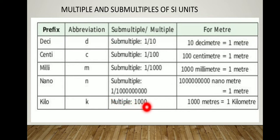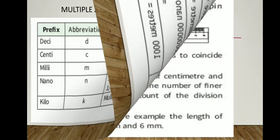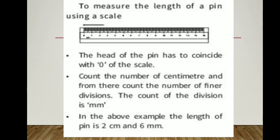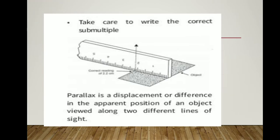To measure the length of a pin using a scale: first, the head of the pin has to coincide with zero on the scale. Second, count the number of centimeters, then count the number of fine divisions — each division is one millimeter. In the above example, the length of the pin is two centimeters and six millimeters. Parallax is a displacement or difference in the apparent position of an object viewed along two different lines of sight.